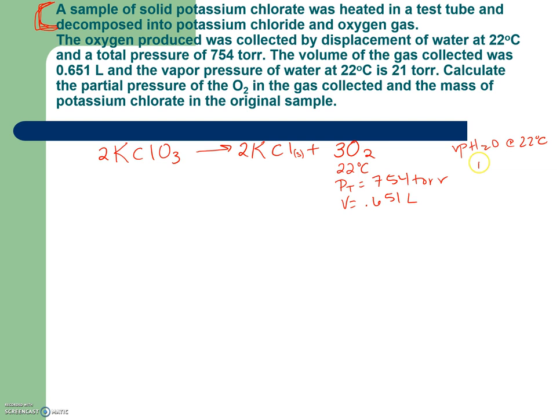If it was a higher temperature, there would be more evaporation, and therefore this number would be higher. You get it from a table. It's not something that you would know. There's a table that you read that has that information. So it says calculate the partial pressure of O2 in the gas collected, and then the mass of the potassium chlorate in the original sample. So this is a many-step problem.